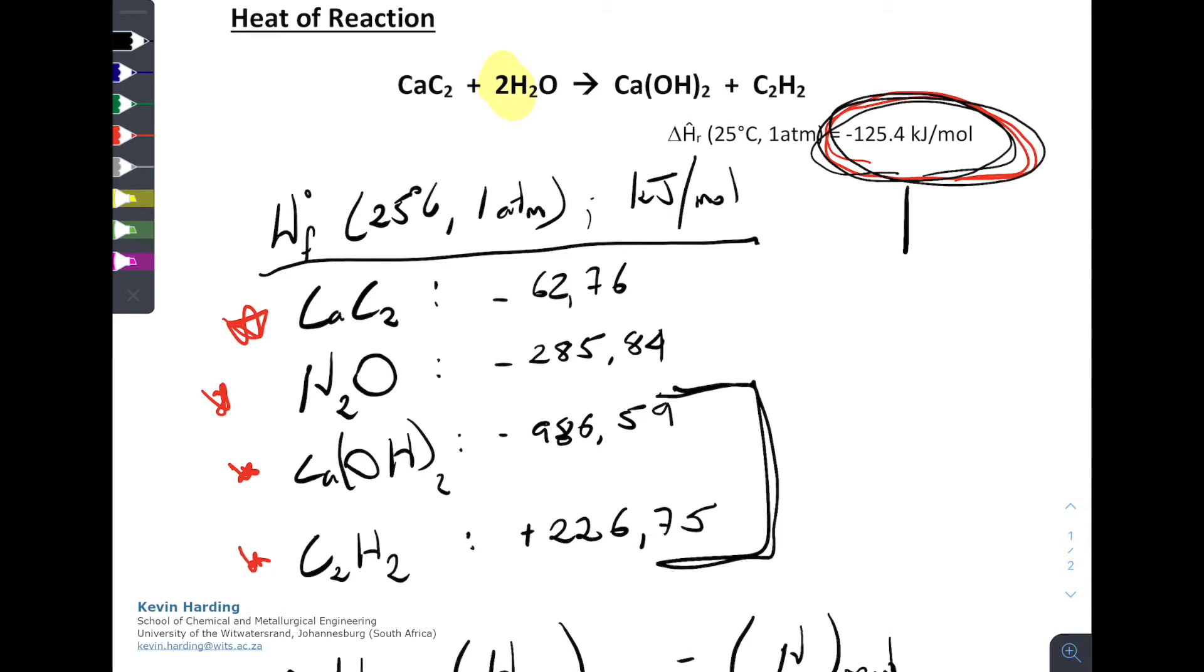The one thing that I cannot stress enough is that the value 125.4 had to be for a 100% conversion. The inlet and the outlet temperatures were all at 25 degrees Celsius. There was no excess, there was nothing else that was coming into that system.